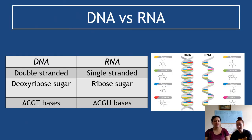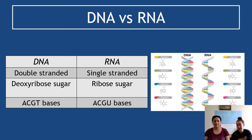The final thing we're going to talk about in this video is a comparison of DNA versus RNA. DNA is a double-stranded molecule in a double helix shape, uses deoxyribose sugars, and its bases are A, C, G, and T. Whereas RNA is single-stranded — that's one of the big differences — it's a single-stranded helix, uses ribose sugar, and has bases A, C, G, and U. Remember U for uracil instead of thymine. You can see the difference nicely in the diagram.